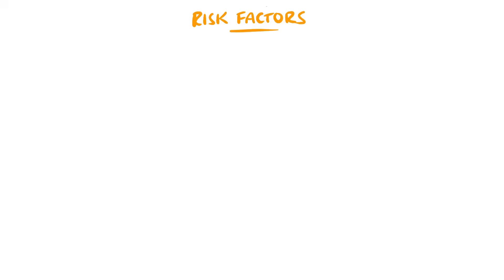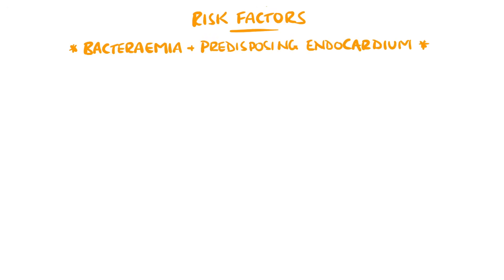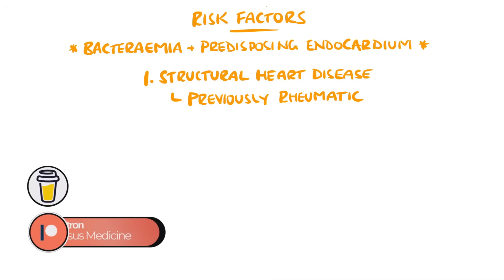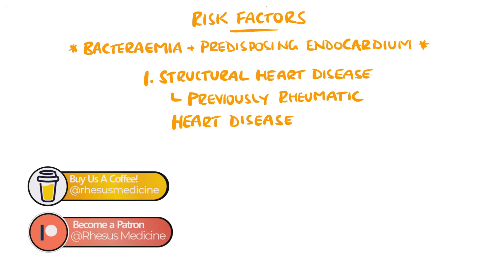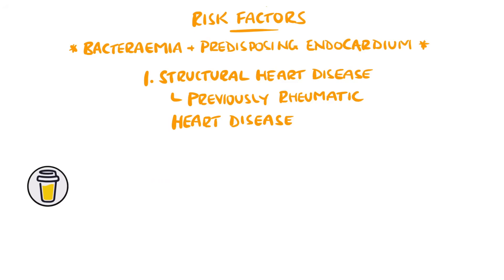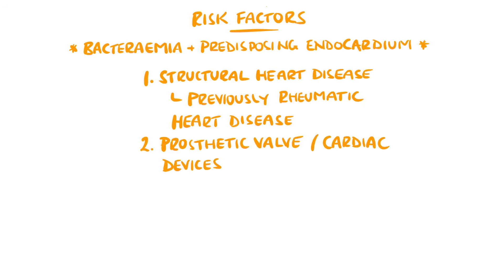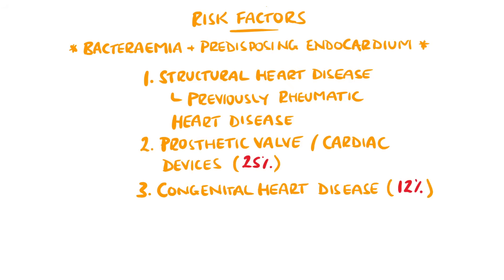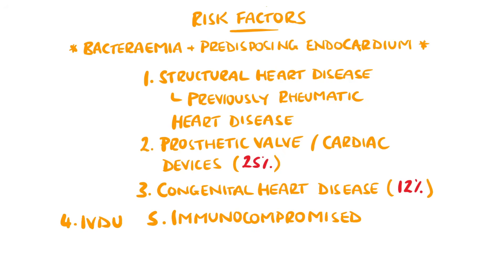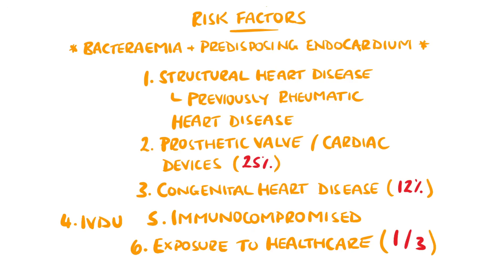We've said that bacteremia and a predisposing endocardial insult are typically needed for infective endocarditis. Specifically, structural heart disease is the largest risk factor, which used to be commonly from rheumatic heart disease. However, in the developing world, it remains the most common predisposing factor. Prosthetic valves and cardiac devices like defibrillators and pacemakers are significant risk factors present in around one in four cases of infective endocarditis. Underlying congenital causes of structural heart disease were present in around 12%. Other factors include intravenous drug use, an immunocompromised state, which can allow bacteria to reach higher concentrations in the blood. Another major factor is exposure to healthcare settings, which is thought to account for one in three cases in the developed world.